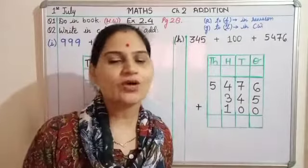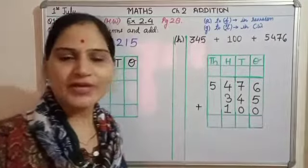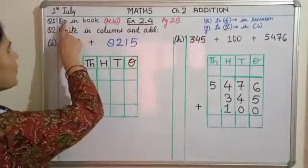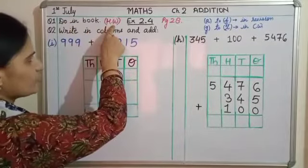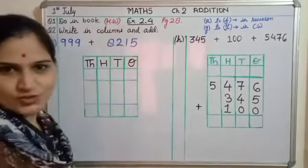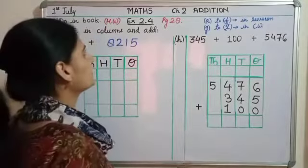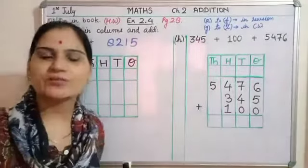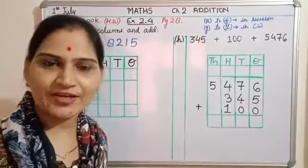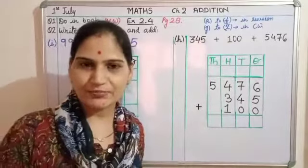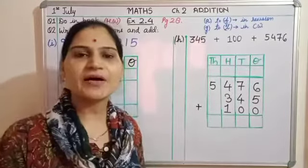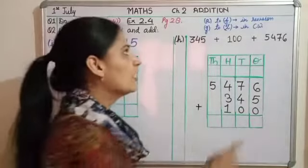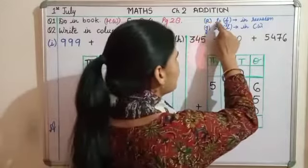Now in exercise 2.4 it is again addition. Question 1 you have to do in the book. Questions are printed in your book. So you can do question number 1 in your book as your classwork of exercise 2.4, chapter 2 addition, page number 28.